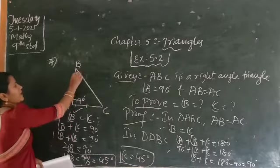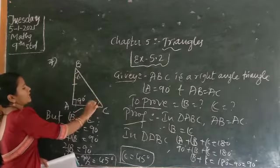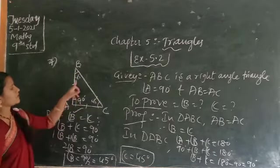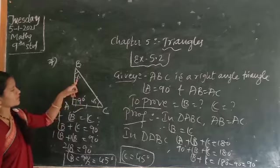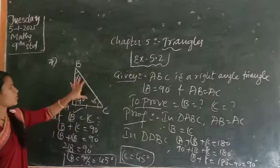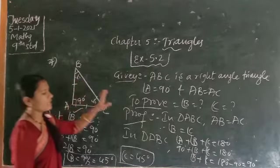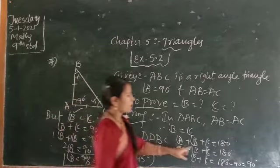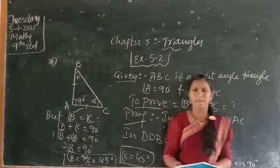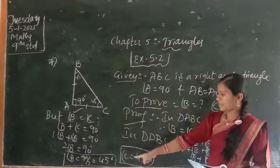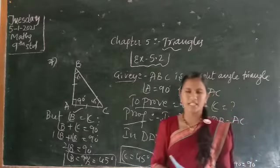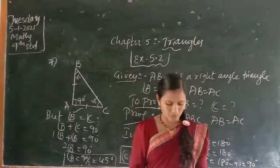If you add all the angles: angle B is 45 degrees, angle C is 45 degrees, and angle A is 90 degrees — 90 plus 45 plus 45 gives 180 degrees total. The sum of angles of the triangle is 180 degrees, which confirms angle B is 45 degrees and angle C is 45 degrees. That is how you solve this.